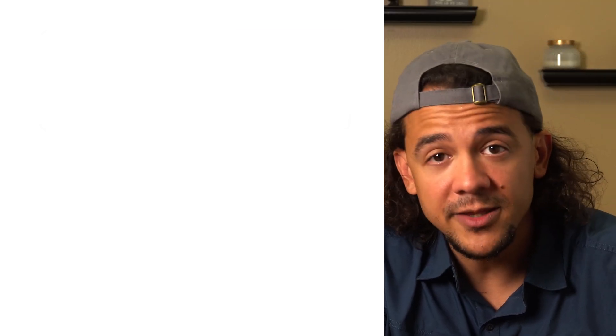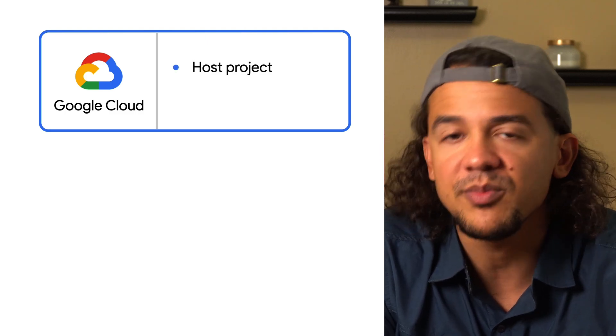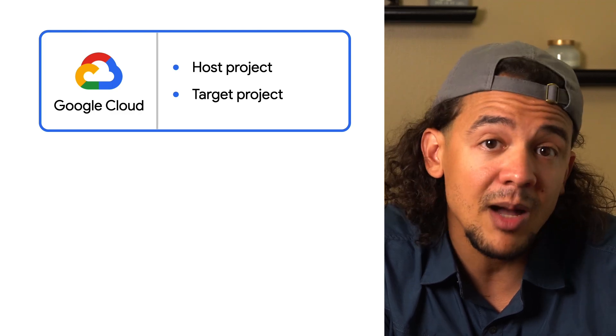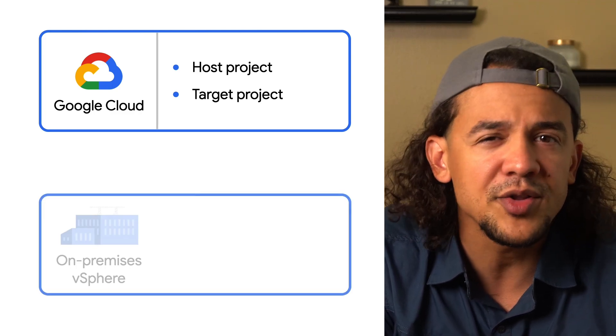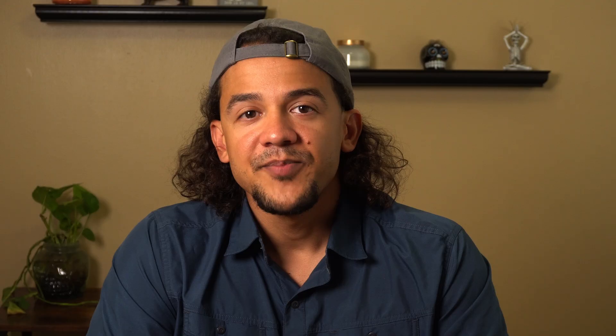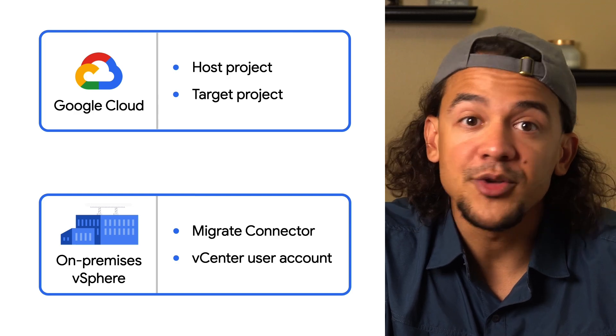It's got some built-in testing that will help you validate things before you make the move, and there's no client-side software that you need to worry about installing on your virtual machines. Moving your virtual machines from your own on-prem racks to Google Cloud is a big move. Before anything, you'll need to create a host project — the Google Cloud project that will control the migration process. You'll also need to have the Migrate Connector running from your on-premises vSphere environment. Migrate Connector will set your on-premise vSphere environment as a migration source and establish a secure data path between it and your host project.